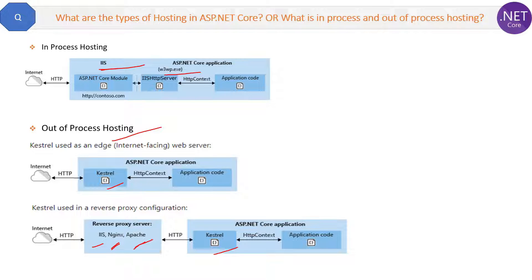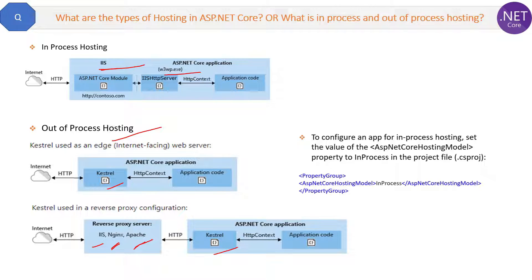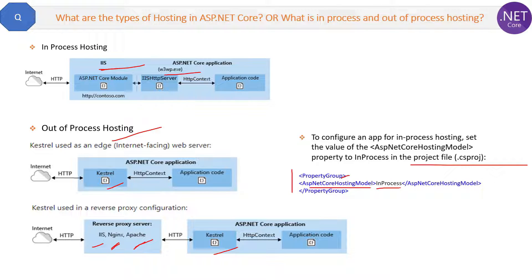By default in .NET Core, we have out-of-process hosting. If you want to change it to in-process hosting, you have to update the .csproj project file. Under the property group, you set the AspNetCoreHostingModel to InProcess, and then your application will follow the in-process model.